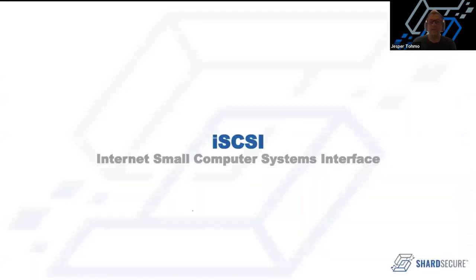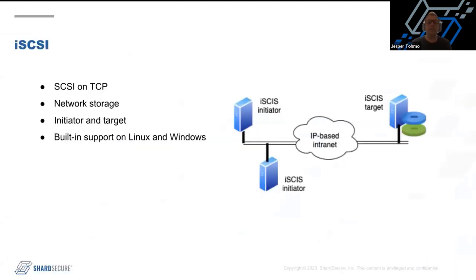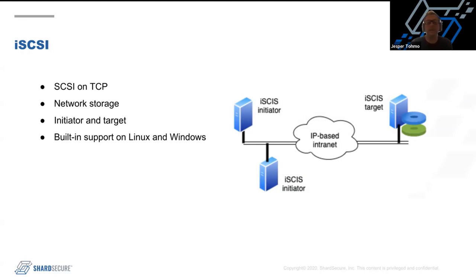Now let's look at iSCSI — Internet Small Computer Systems Interface. It's basically SCSI commands on top of TCP. It's set up with an initiator and a target: the initiator is the operating system or client that wants to connect and add that storage into its service, and the target is the one that exposes that data disk. The initiator is supported out of the box in Linux and Windows, so you can use that to connect to it and it will look like a disk to the operating system — just like you attach a disk physically into the machine, but it uses the network to communicate between the initiator and the target.